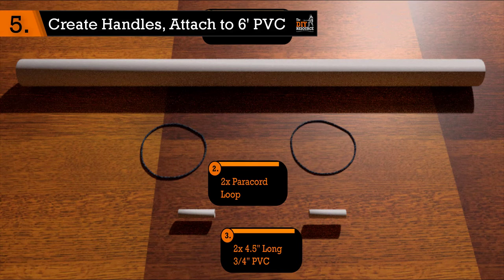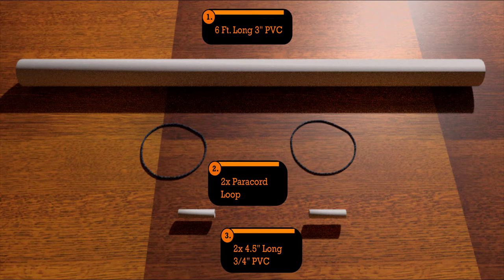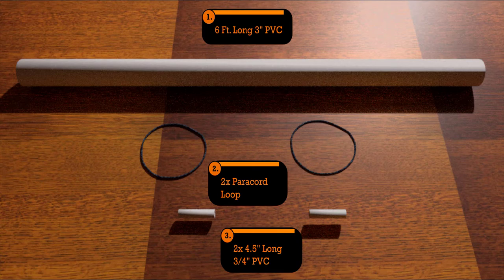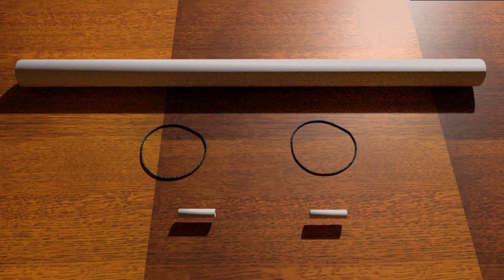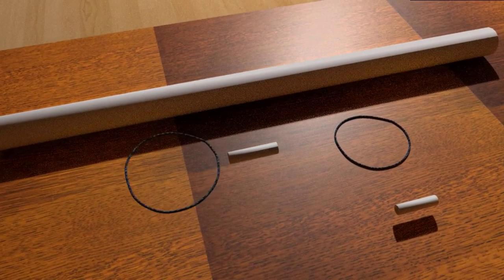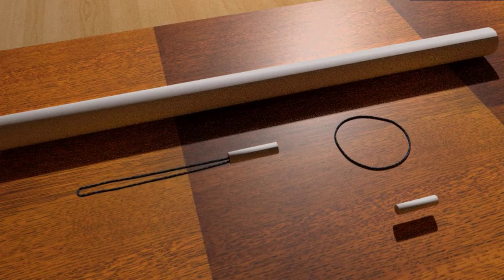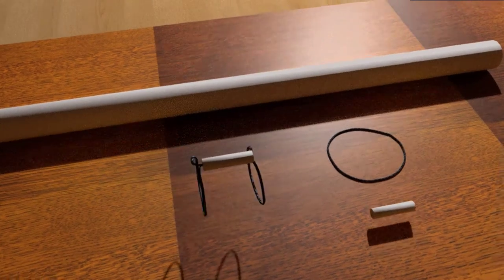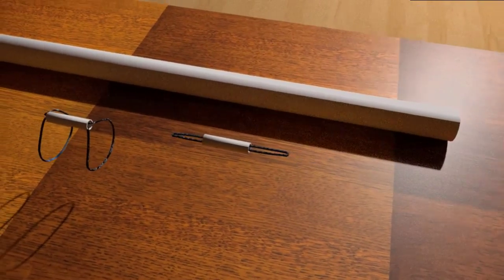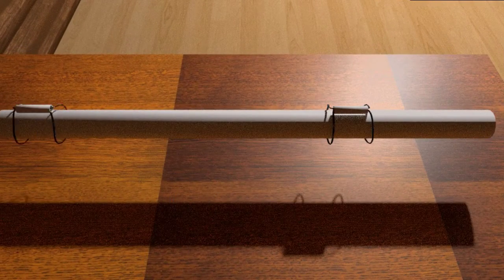Step 5. Create handles attached to 6 foot PVC. In this step, your job is to weave your paracord loops through the two 3 quarter inch diameter pieces of PVC that you cut in Step 2. After the loops are through the PVC, they're placed on the large 6 foot length of PVC which you cut in Step 1.